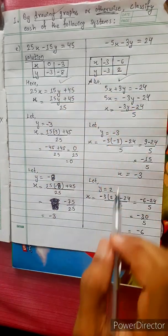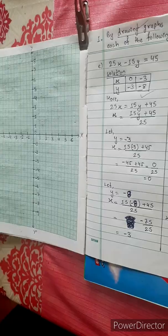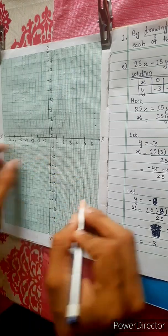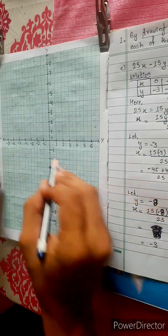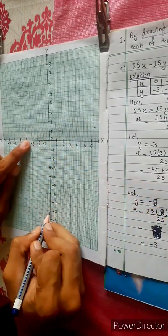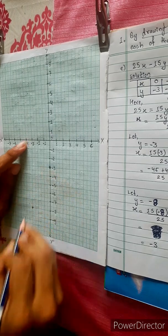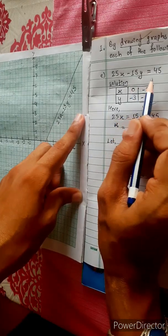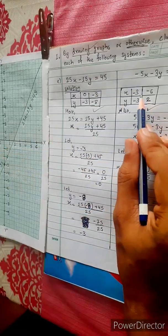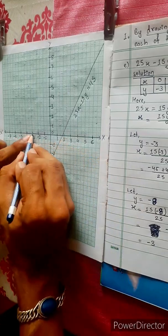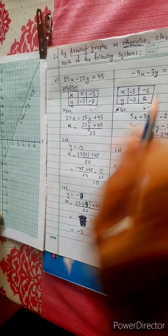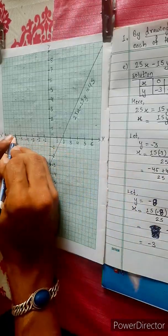Now we have our data points. For the first equation 25x minus 15y equals 45, the points are (0, minus 3) and (minus 3, minus 8). For the second equation 5x plus 3y equals minus 24, the points are (minus 3, minus 3) and (minus 6, 2).